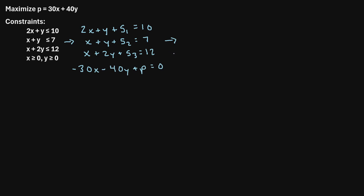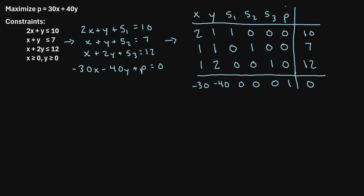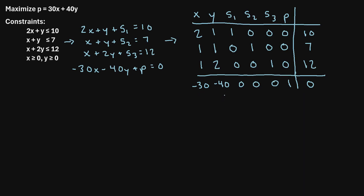Now that we've rewritten each of these equations, we're going to place the coefficients of each equation into a tableau. We've written the variable names along the top and the coefficients from the equations within the tableau. The next step is to focus on the bottom row and ask: what is the most negative value? That would be the negative 40, so this column is going to be our pivot column.